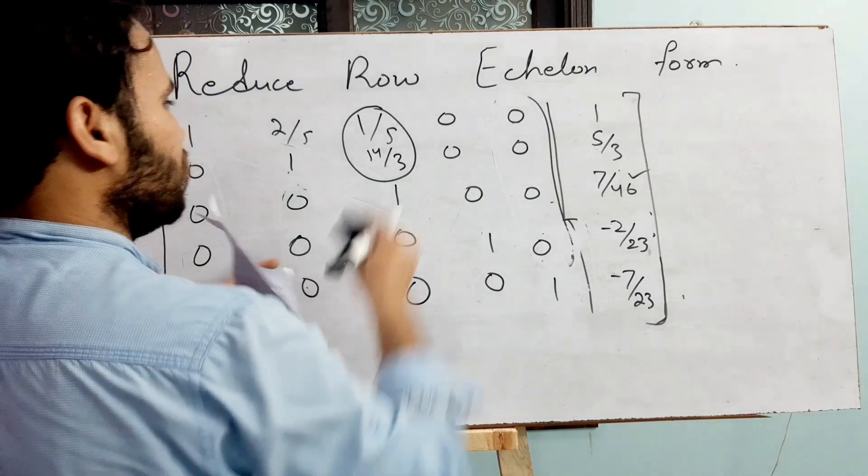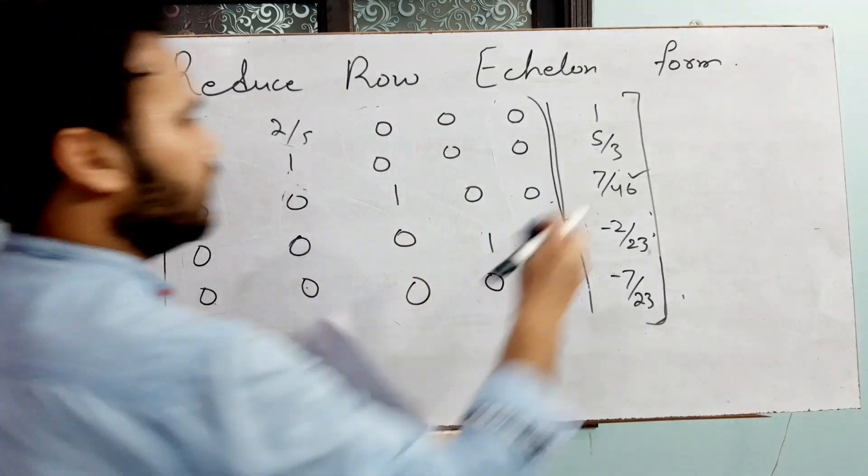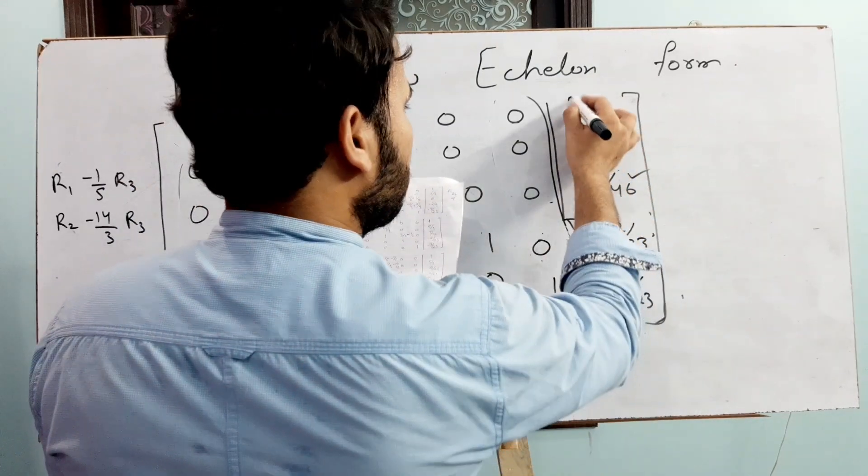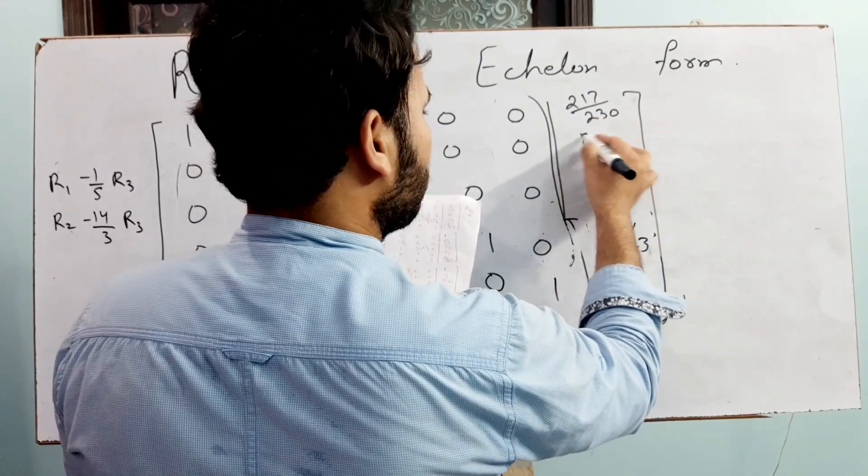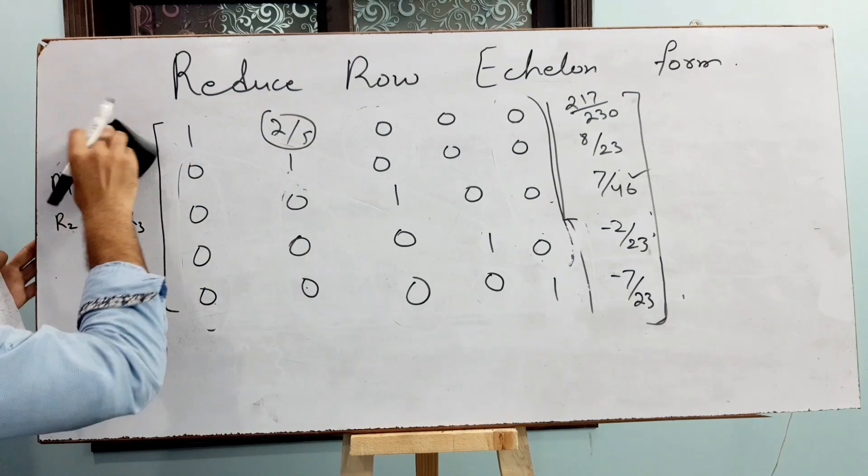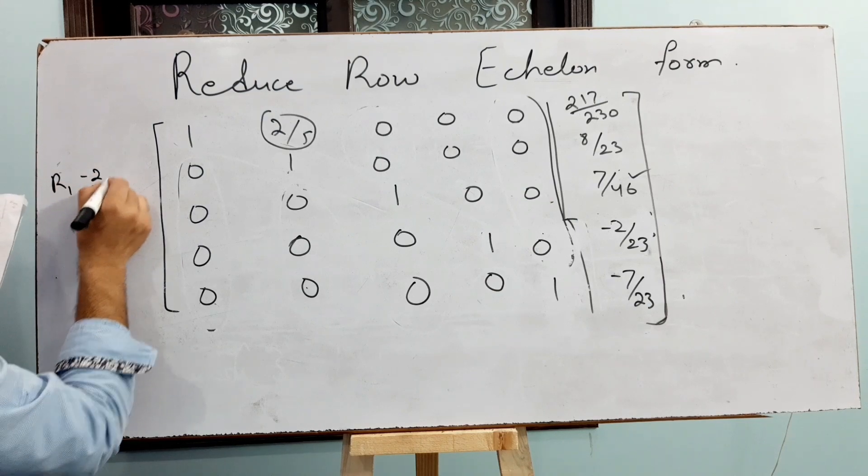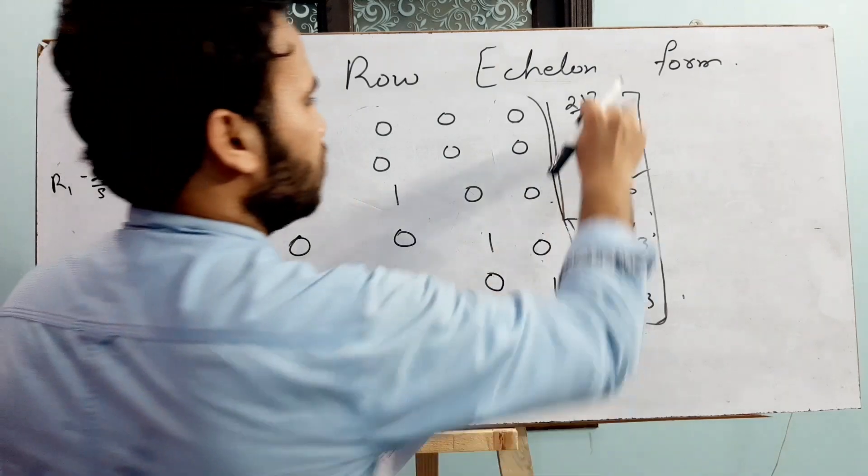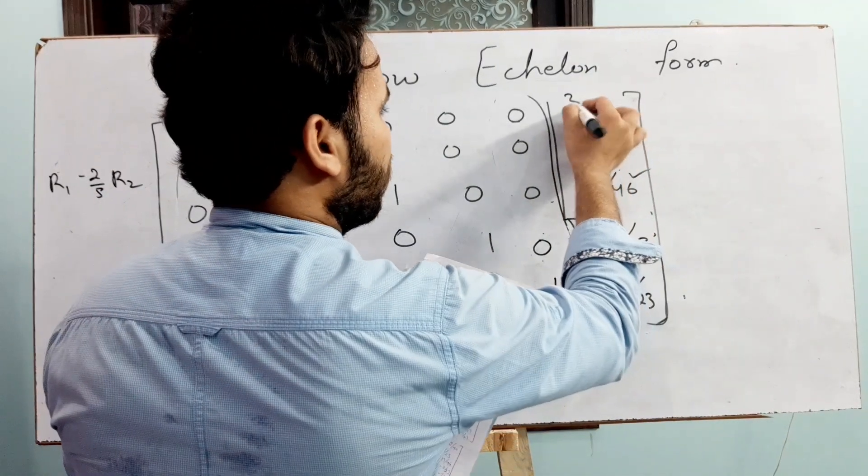In the last one, for making this entry should be 0, I think R1 minus 2 by 5 times R2, then this last entry will be 0 and this one will be 37 by 46.